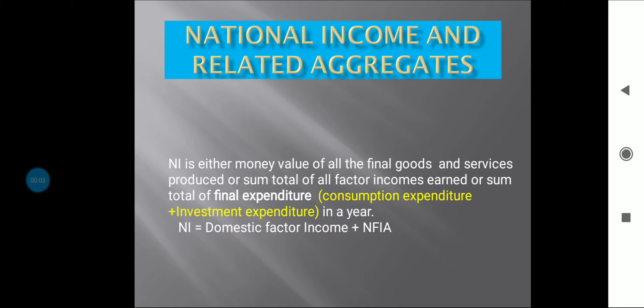Under economics fundamentals today we are going to talk about national income and related aggregates, a very important topic. As far as the calculation of national income is concerned, as we have discussed during the circular flow of income, there are three phases of an economy: production phase, income and distribution phase, and expenditure phase. Similarly, the calculation of national income is based on three methods: production method, income method, and expenditure method, about which we will talk in detail later on.